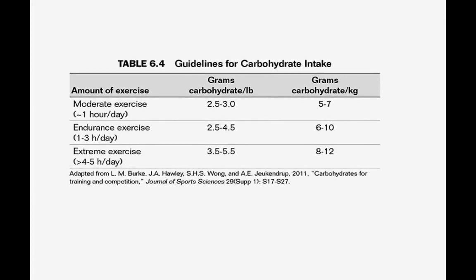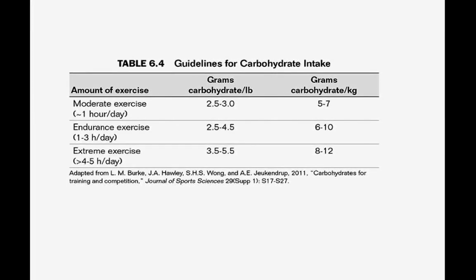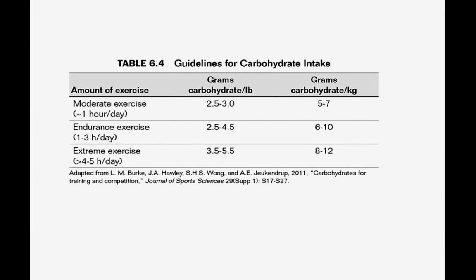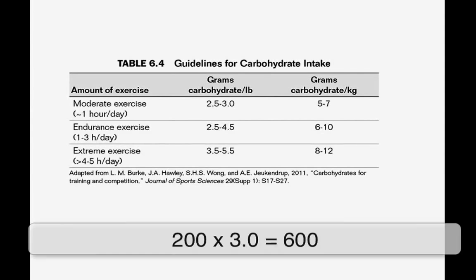Energy expenditure and length of training will determine the exact amount. What about the same 200-pound subject who is active only about an hour a day? How many grams of carbohydrate will he need? Did you get 500 to 600 grams? If so, you are correct. 200 pounds times 2.5 is 500 and 200 pounds times 3.0 is 600.